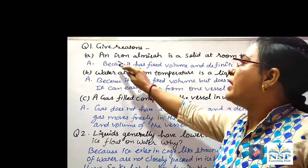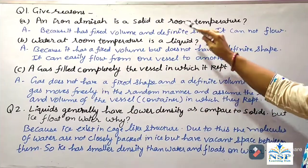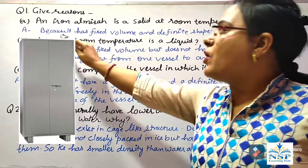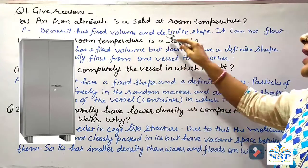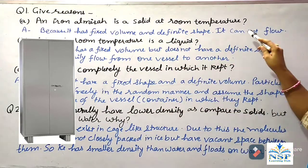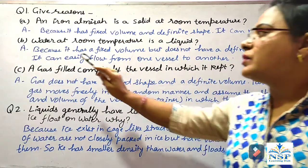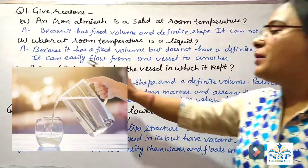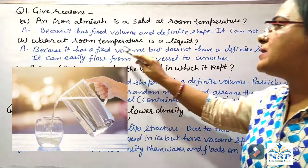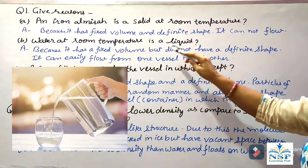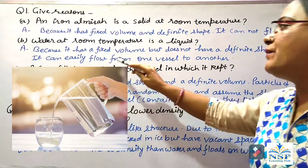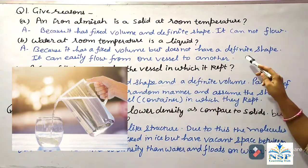Students, it's time for questions. Give reason: An iron almirah is a solid at room temperature — why? Because it has fixed volume and definite shape, and it cannot flow. Water at room temperature is a liquid — why? Because water has fixed volume but does not have definite shape, and it can easily flow from one vessel to another.